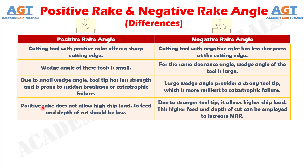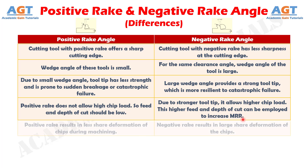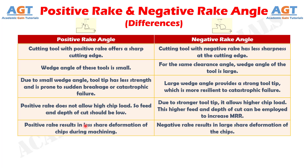Number 4: Positive rake does not allow high chip load, so feed and depth of cut should be low, whereas due to the stronger tool tip, negative rake allows higher chip load. This higher feed and depth of cut can be employed to increase material removal rate. Number 5: Positive rake results in less shear deformation of chips during machining, whereas negative rake results in large shear deformation of the chips.